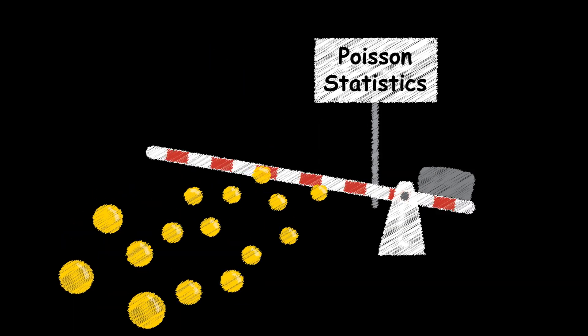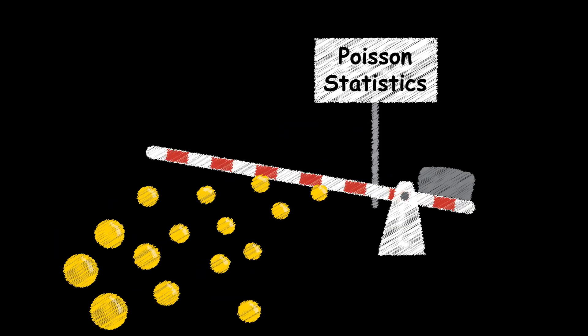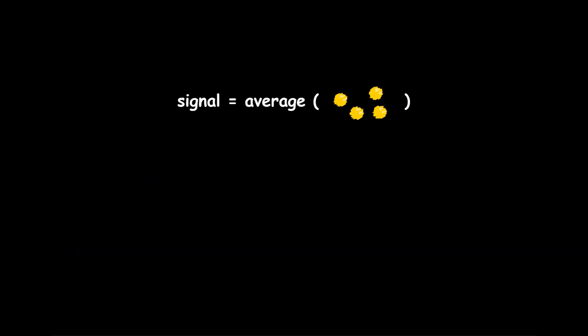Luckily, the process of photon arrival is governed by Poisson's statistics, so we can calculate the signal as the average photon absorption rate, and the noise as the square root of the signal.